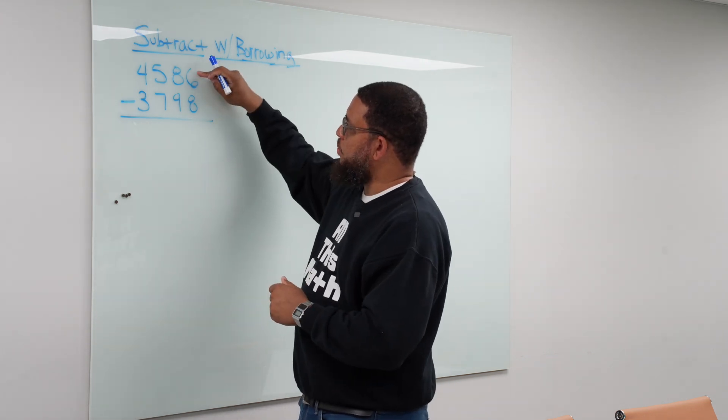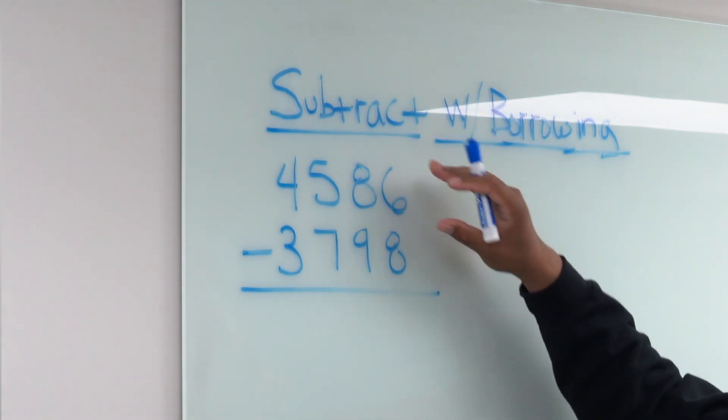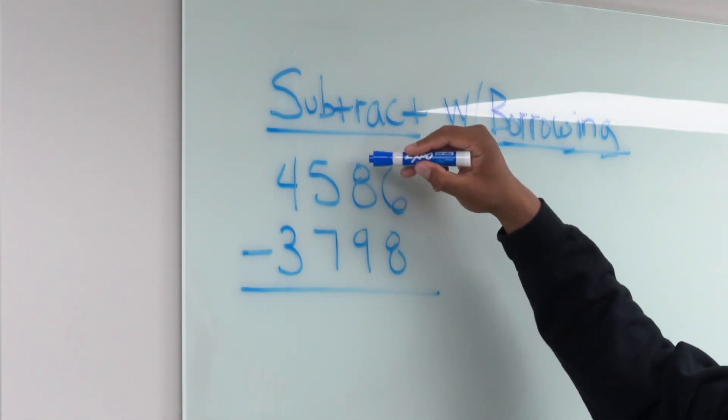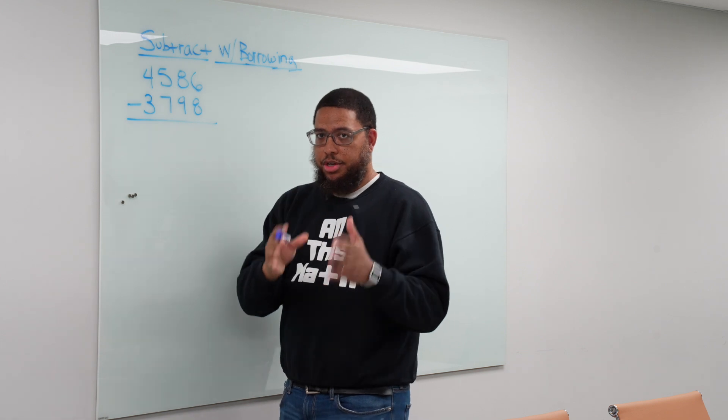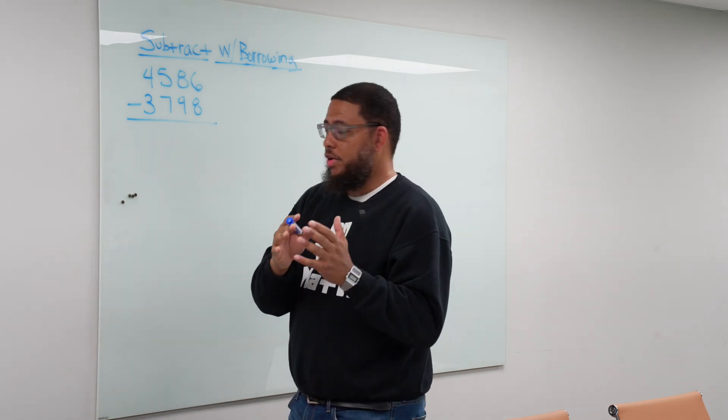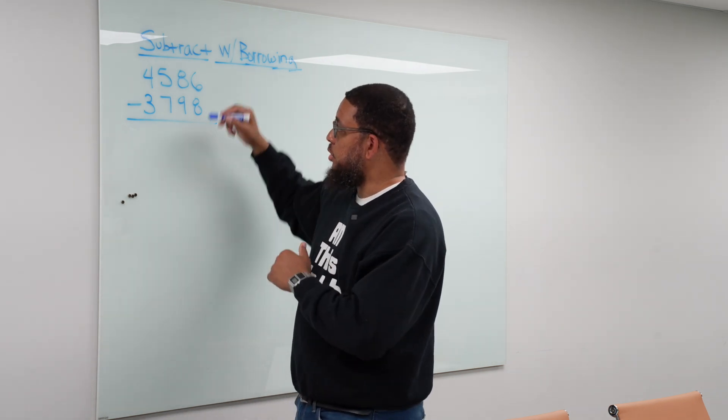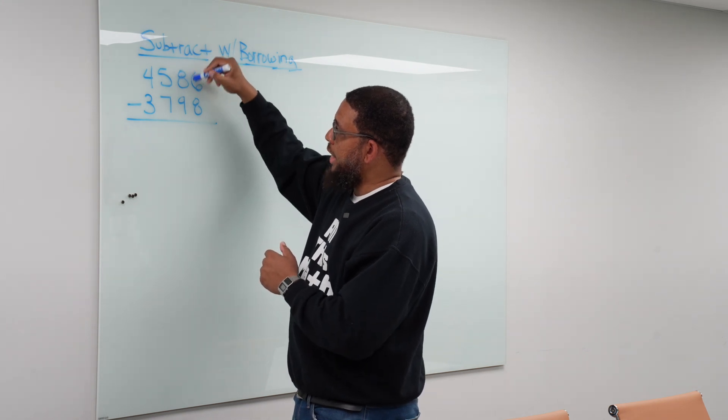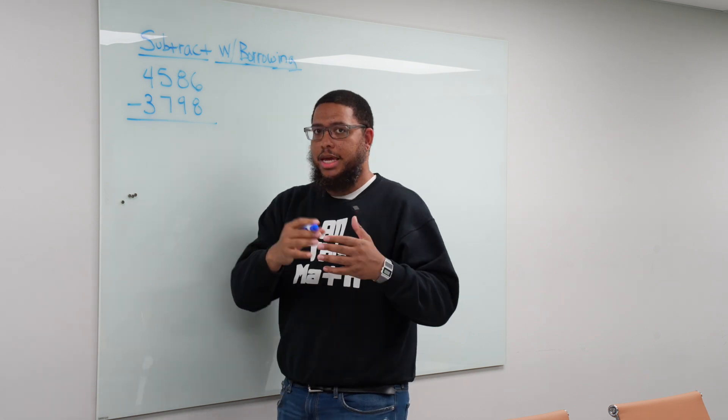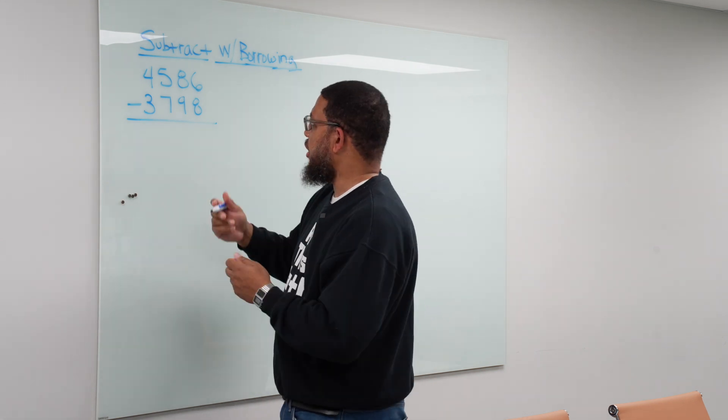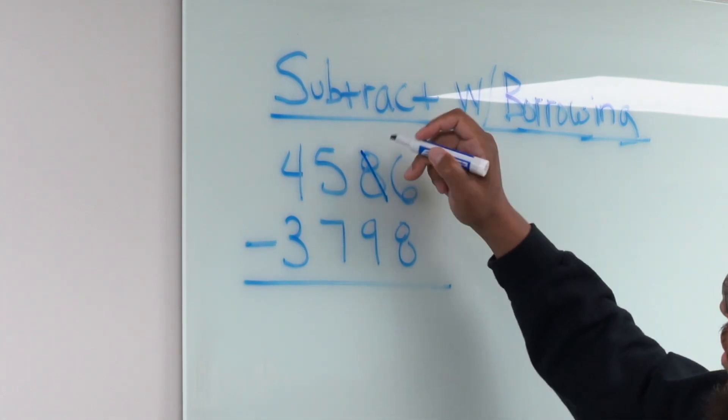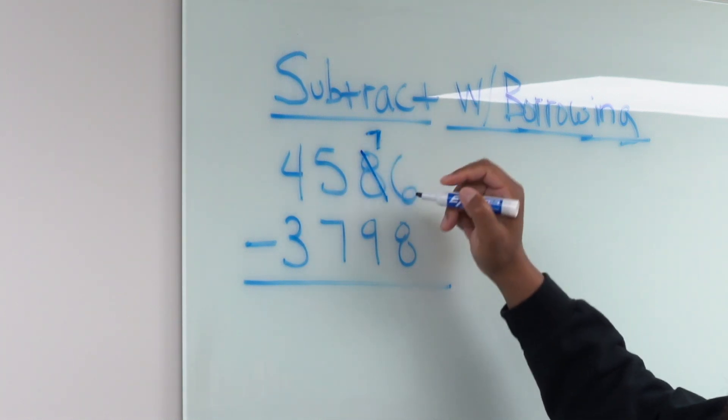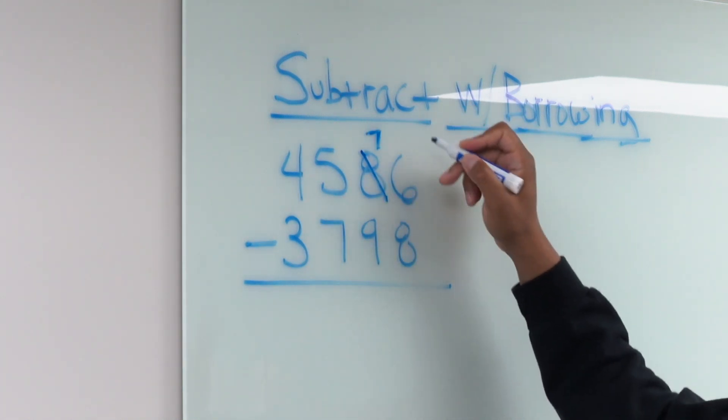So we notice in the ones place we have a 6 minus an 8, but we don't want to end up with a negative. So we go to the tens place and that's why place value is very important for young people to understand. So we go to the tens place and we essentially borrow 10 from these 8 tens because that's what that 8 means. It's an 8 but it really represents 8 tens, like 8 dimes if you're thinking about money. So we cross the 8 out and that becomes a 7.